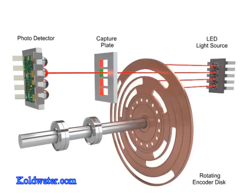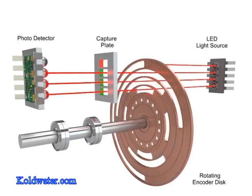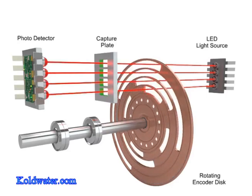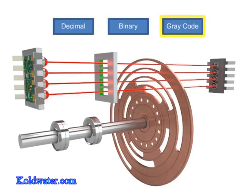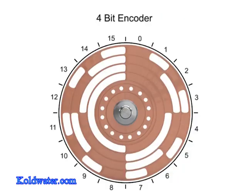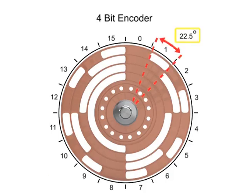The most common types of numerical encoding are decimal, binary, and gray code. In a four-bit encoder there are 16 unique combinations, or numeric codes, every 22.5 degrees.